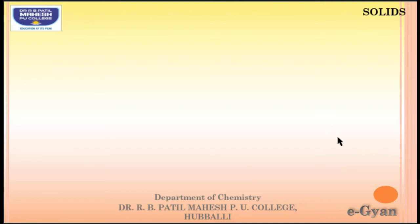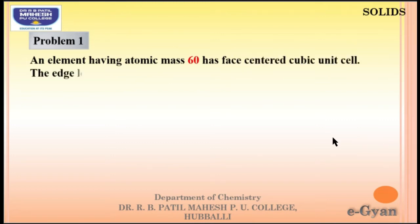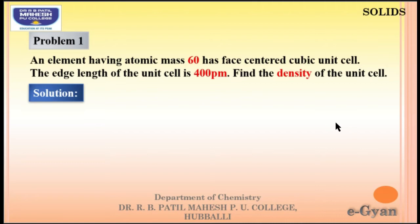Let us start with the numericals. First numerical: an element having atomic mass 60 has a face-centered cubic (FCC) unit cell. The edge length of the unit cell is 400 picometers. Find the density of the unit cell. In FCC, the number of particles Z is equal to 4.